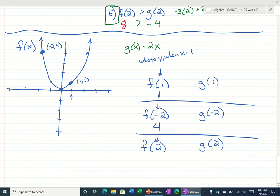And then this one, what's y when x is 2? Here's x is 2. We have this point right here. That's 2, 4.